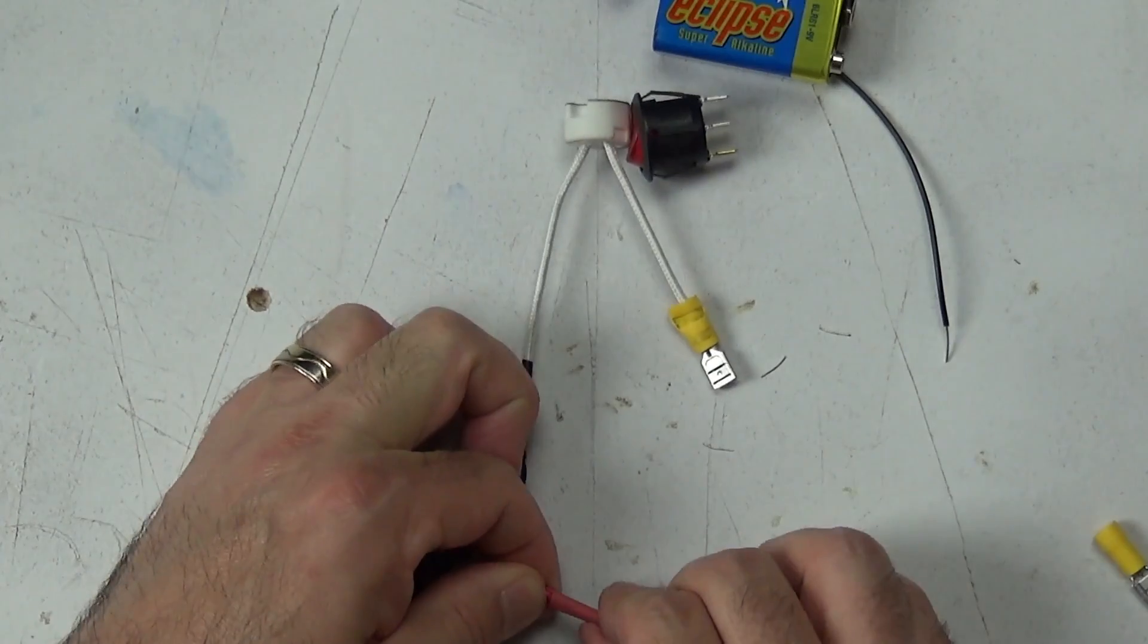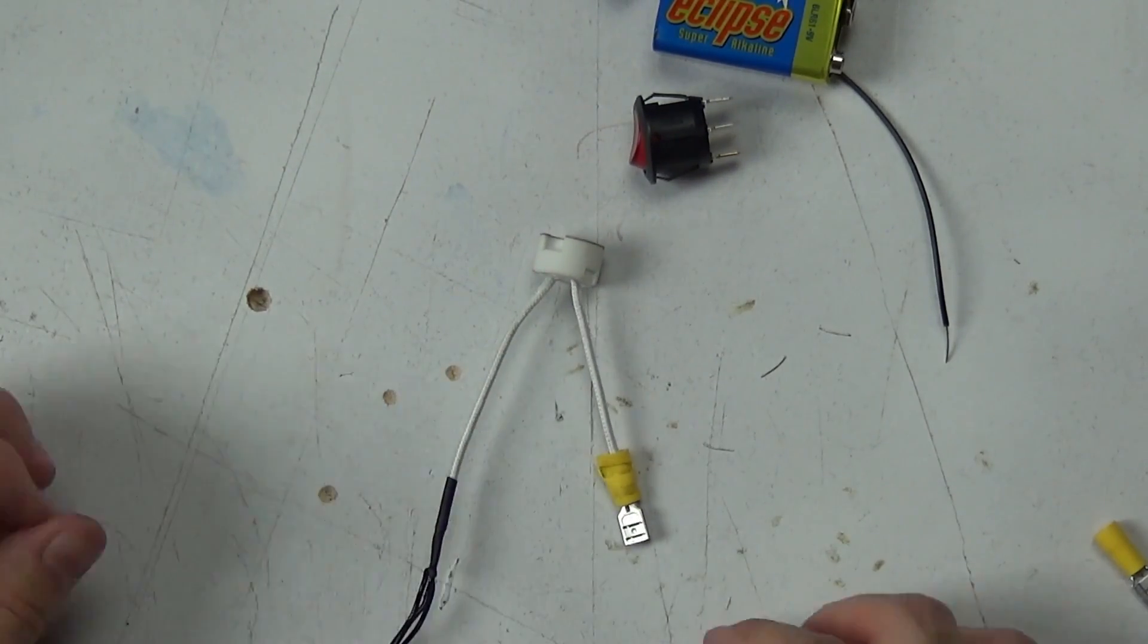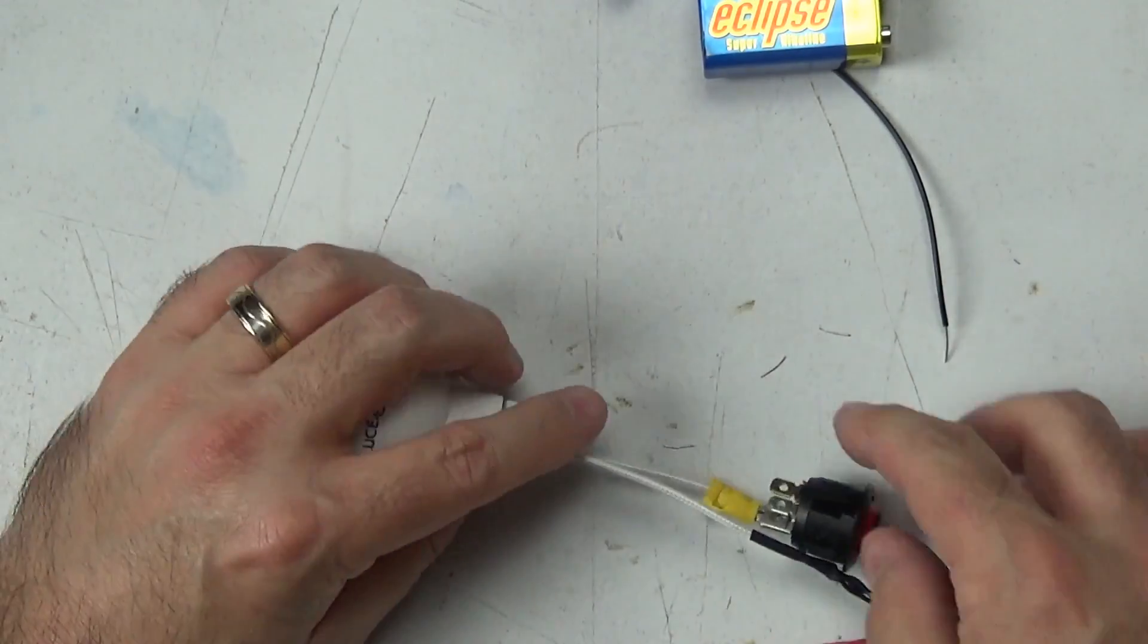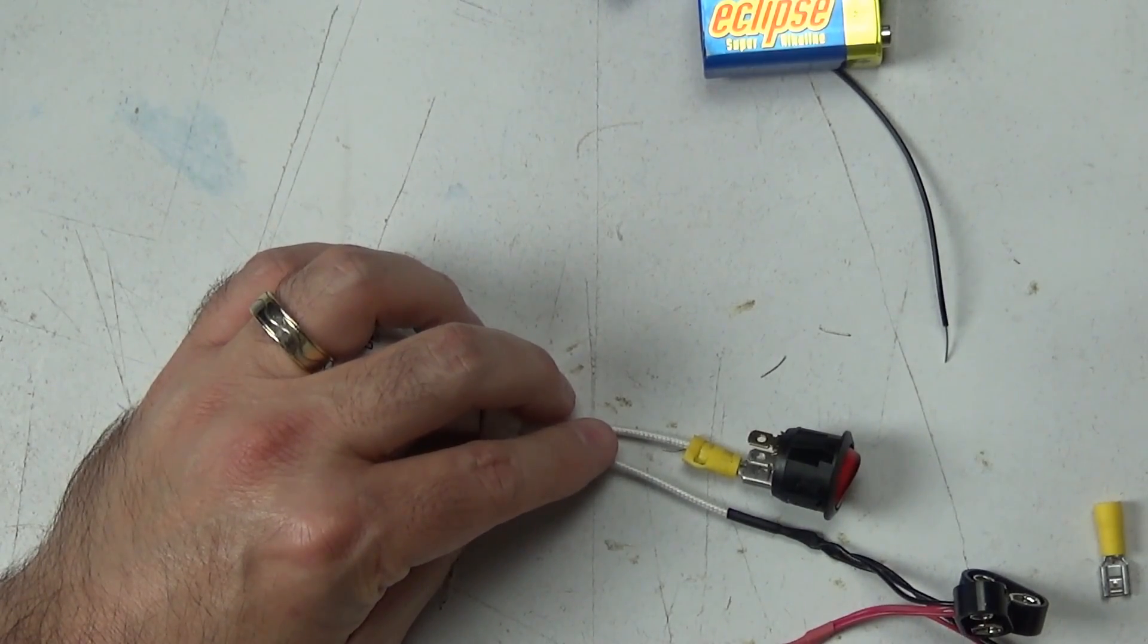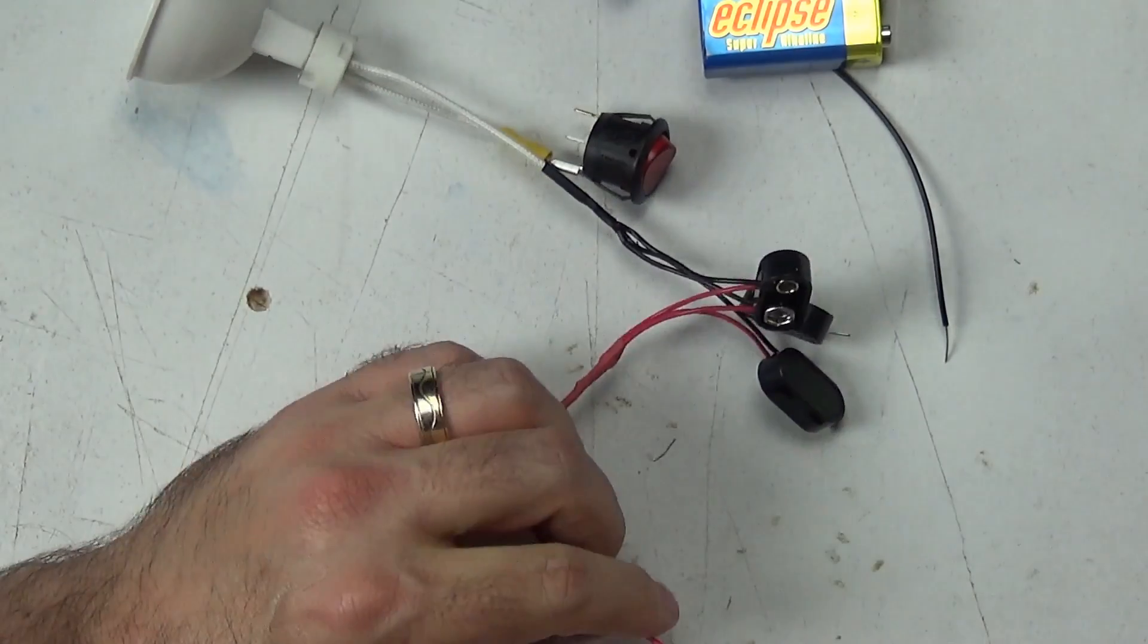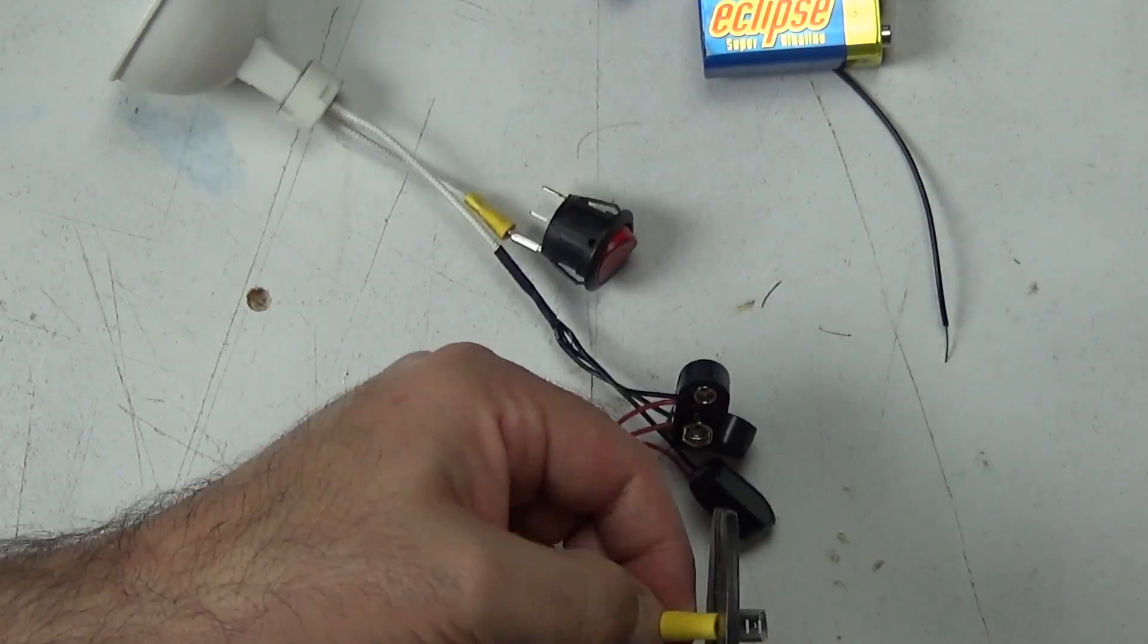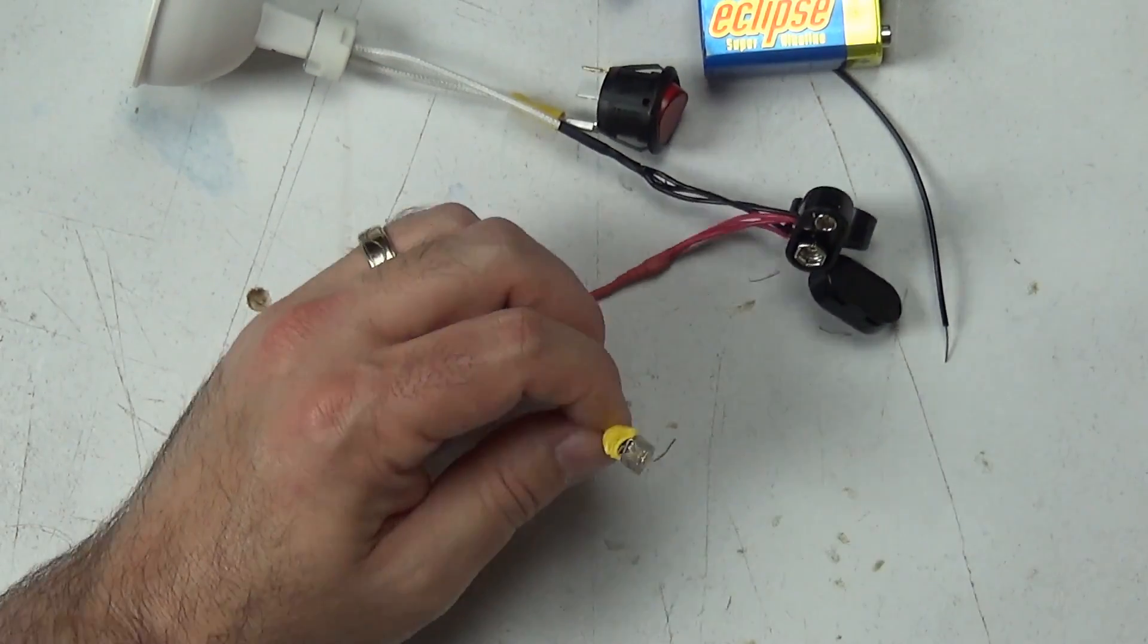The other side of the MR16's pigtail goes to one part of the switch and the negative from the 9 volt battery snaps goes to the middle terminal of the switch. Depending on your switch you might have to, it might only be two terminals or you might have to just figure out which ones are relevant to the on-off position of your switch. Some switches are a bit different.